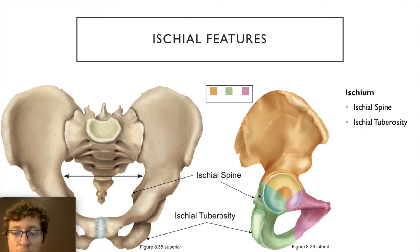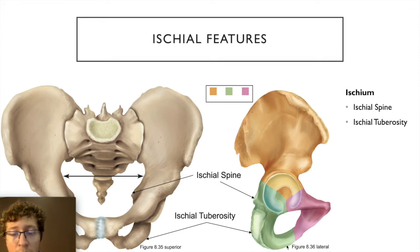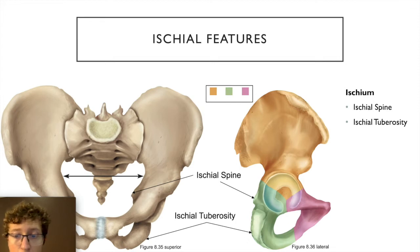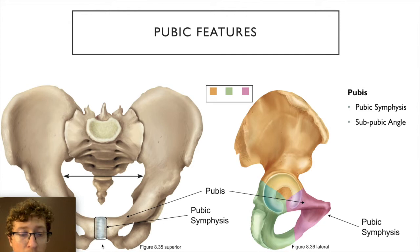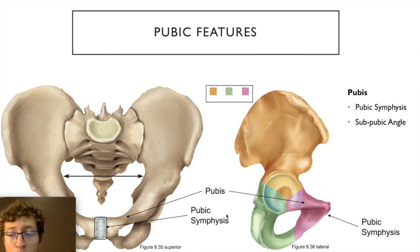The ischium is the inferior portion of the os coxa. It has the ischial spine, allowing muscles to attach, and the ischial tuberosity — the rough, raised region at the most inferior part that you feel as the 'bony butt.' The pubic bone is the most anterior bone, and where the two pubic bones meet is the pubic symphysis, a piece of cartilage connecting them.